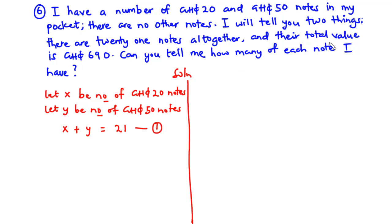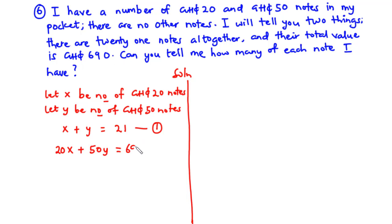We are told that their total value is 690 CDs, meaning when you count the money in terms of value, they sum up to 690 CDs. So we say 20 times X plus 50 times Y equals 690 CDs. This is our second equation, Equation 2. Since we have two equations, we can solve them simultaneously to obtain the values of X and Y.